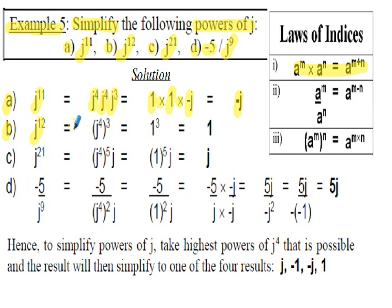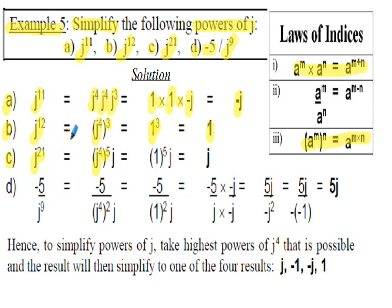Part b: j to the 12 can be written using the third law of indices as j to the 4 raised to the power of 3. Since j to the 4 is 1, that's 1 cubed, which equals 1. So j to the 12 is 1. Part c: j to the 21 is j to the 4 raised to the power of 5, times j to the 1. That gives 1 to the power of 5 times j, which is 1 times j — so j to the 21 is j.